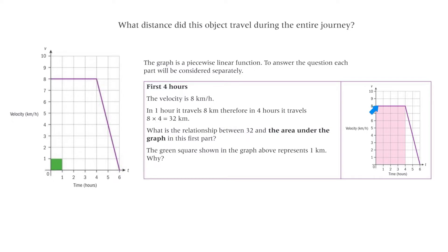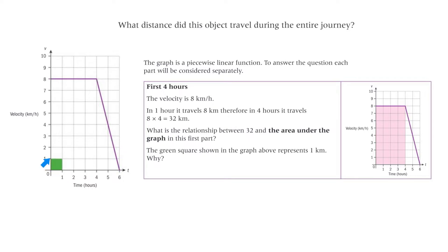The area under that line, under that function, between the line and the x-axis is the distance. The green square shown in the graph represents 1 km. That area has a height of 1 km per hour — in units that's km divided by hour — and a width of 1 hour. So multiplying them: 1 km/hour times 1 hour, the hours cancel and you're left with 1 km.